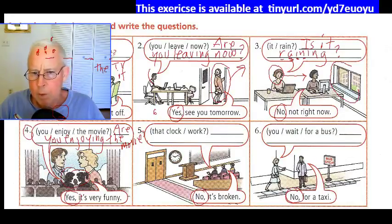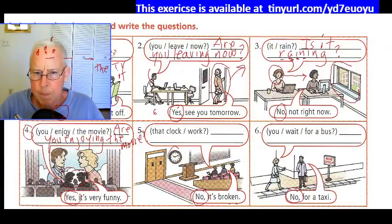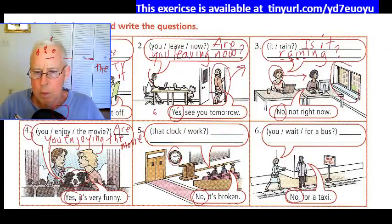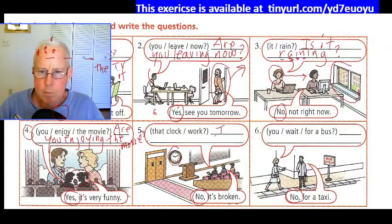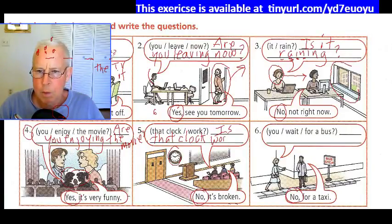Number five: these people are in a lecture hall class, looking at the clock. 'That clock work' becomes: Is that clock working? The classmate says: No, it's broken. Or: No, it isn't. Or: No, it's not.